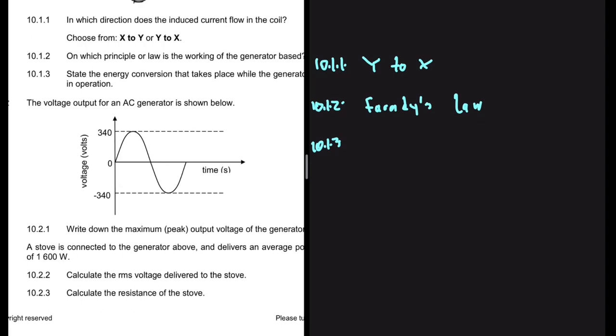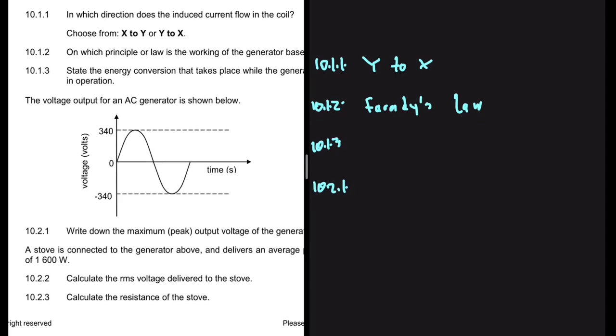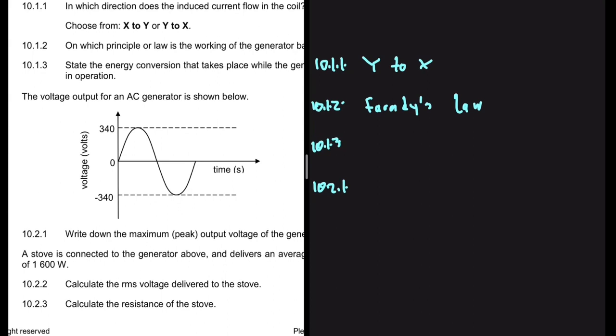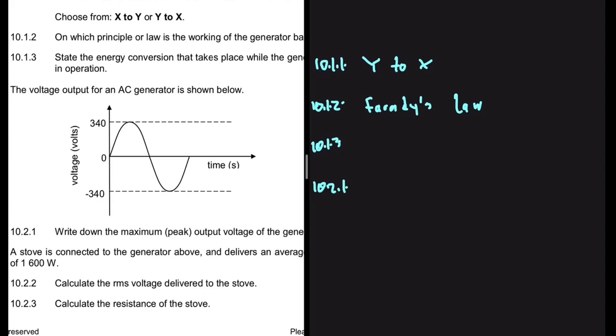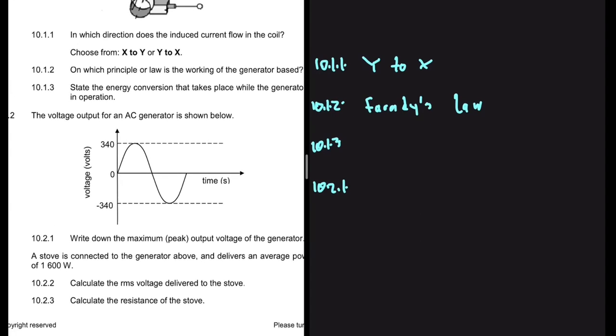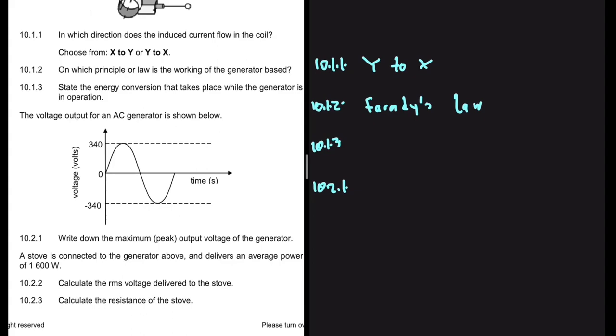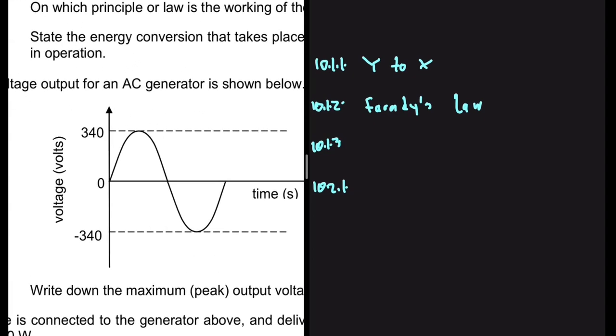Now 10.2. The voltage output for an AC generator is shown below, and there it is as we can clearly see. 10.2.1: Write down the maximum peak output voltage of the generator. If you look at your graph, you will realize that the peak is right here at 340 volts. So we have V_max being equal to 340 volts.